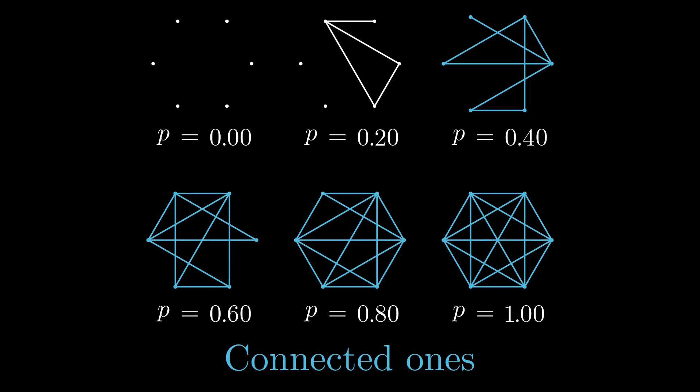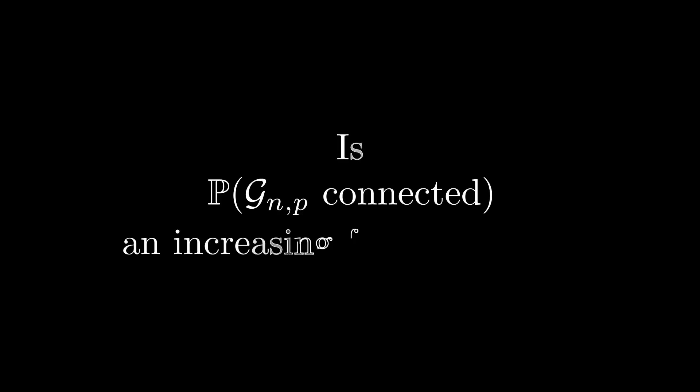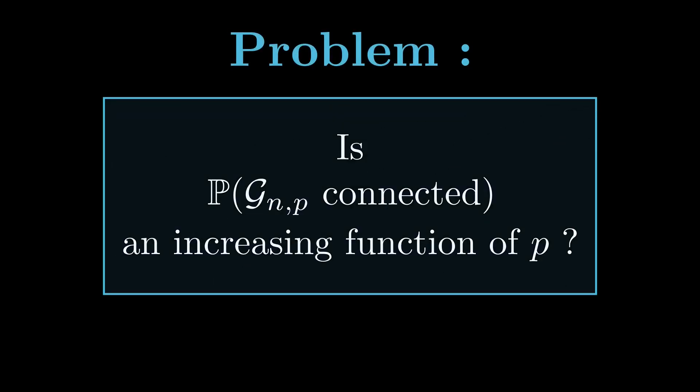Therefore, it seems that if p is large, one has a better chance of drawing a connected graph. It makes sense. If p gets large, then every edge is more likely to appear, so there will be a lot of edges, which can help in some way the graph become connected. So a natural conjecture would be the following: Is the probability that G_{n,p} is connected an increasing function of p? Well, it seems obvious that such a thing should be true by the argument we just mentioned. If you let p grow, then you have more edges in total, in general. However, this fact is actually surprisingly hard to prove, and this problem is actually the one that we will tackle today.